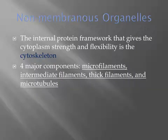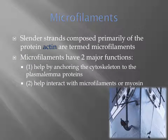The internal protein framework that gives the cytoplasm strength and flexibility is the cytoskeleton. There are four major components: microfilaments, intermediate filaments, thick filaments, and microtubules. Microfilaments are slender strands composed primarily of the protein actin. They help anchor the cytoskeleton to the plasmalemma proteins and interact with myosin.